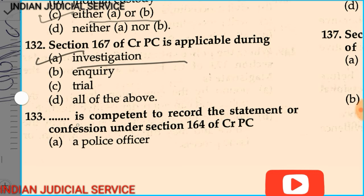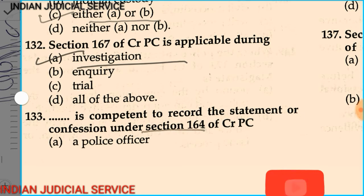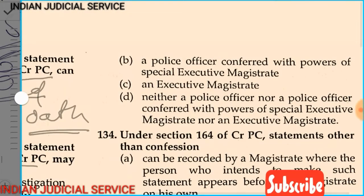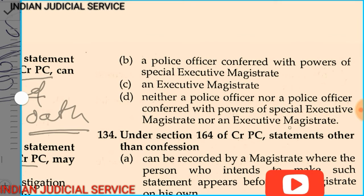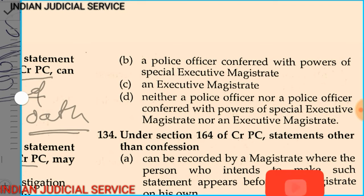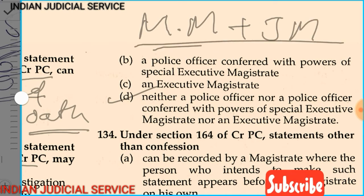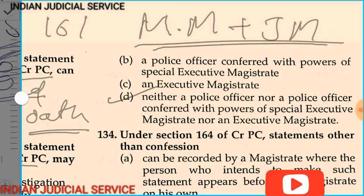Question number 133: Who is competent to record the statement or confession under Section 164? Options include a police officer, a police officer conferred with the power of special executive magistrate, an executive magistrate, or neither of these. The answer is Option D — only a metropolitan magistrate and judicial magistrate can record the examination of an accused or witness under Section 164.